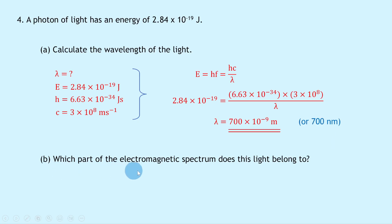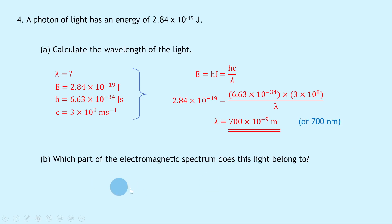Part b asks which part of the electromagnetic spectrum this light belongs to. The range for visible light goes from 400 nm for blue/violet light up to 700 nm for red light, so at 700 nm we're dealing with red light — meaning it's visible light.